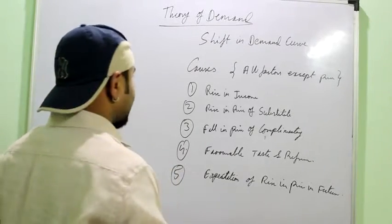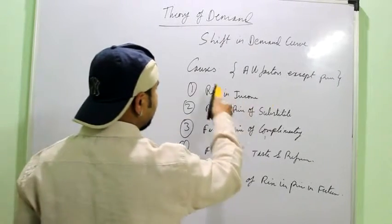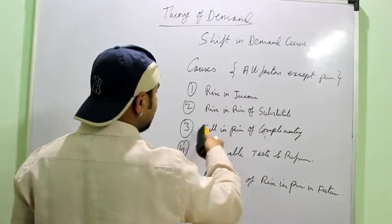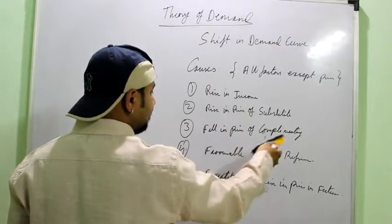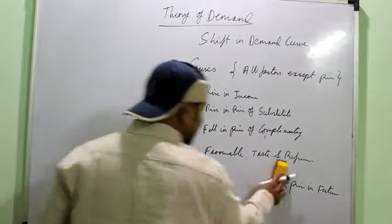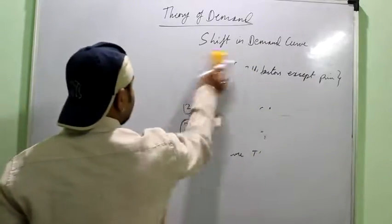And here you do not have the price. And for the leftward shift they will be opposite: fall in income, rise in the price of substitute good, rise in the price of complementary good, unfavorable and so on. So next we will study the leftward shift.